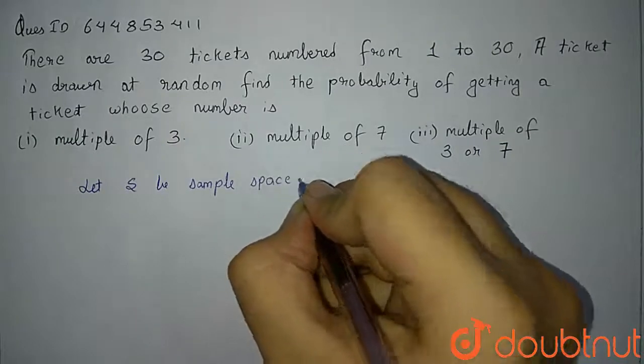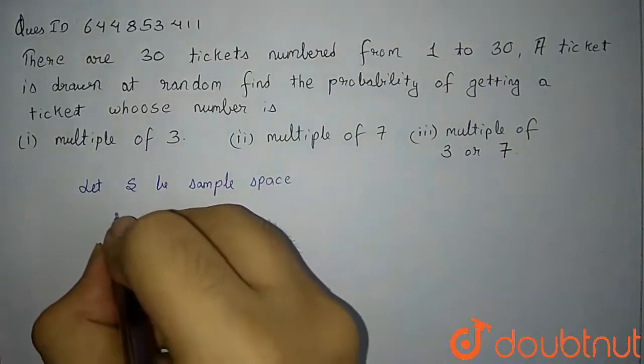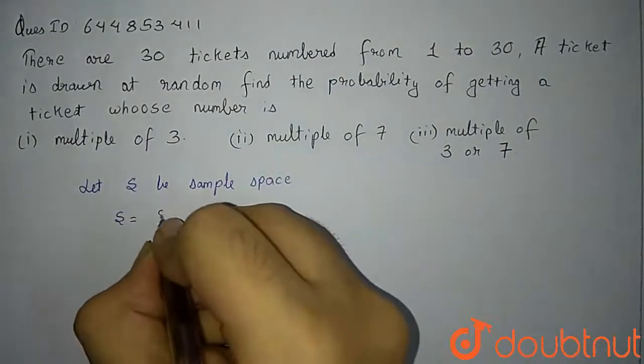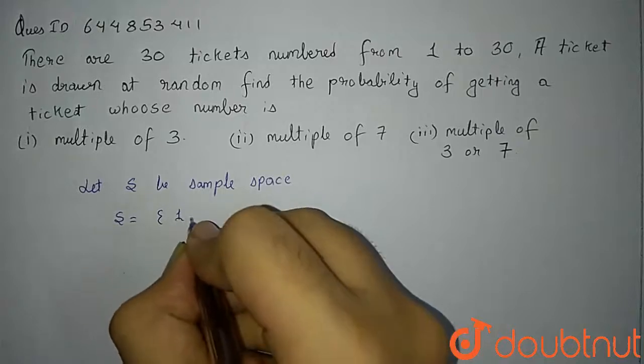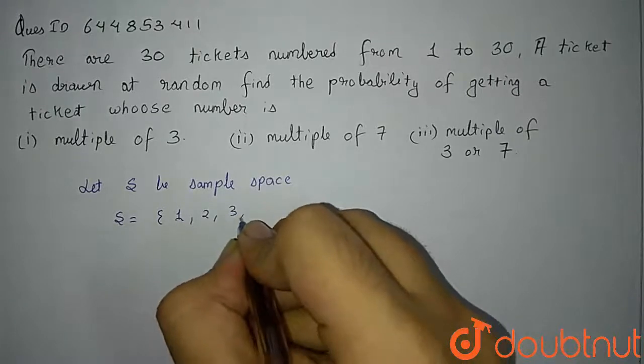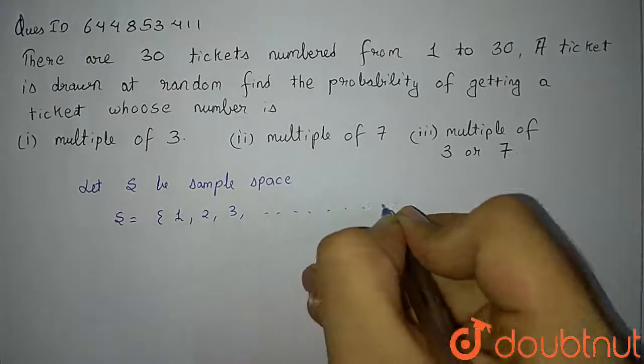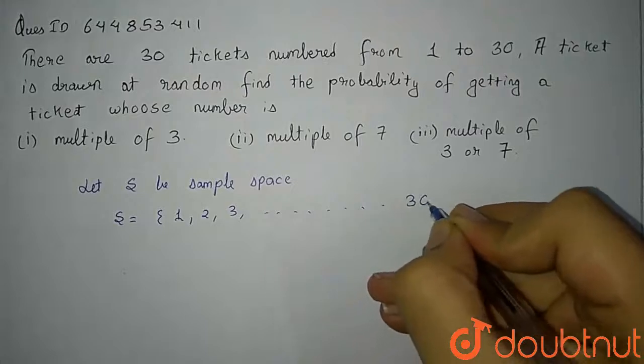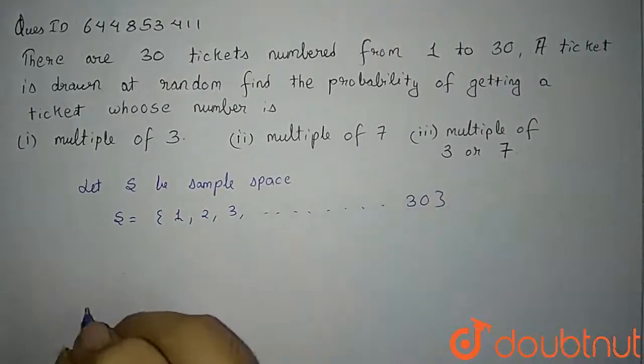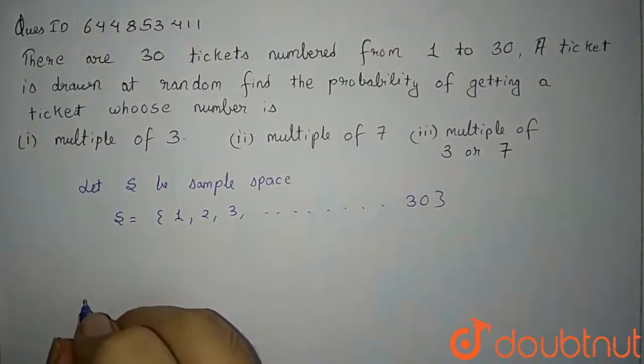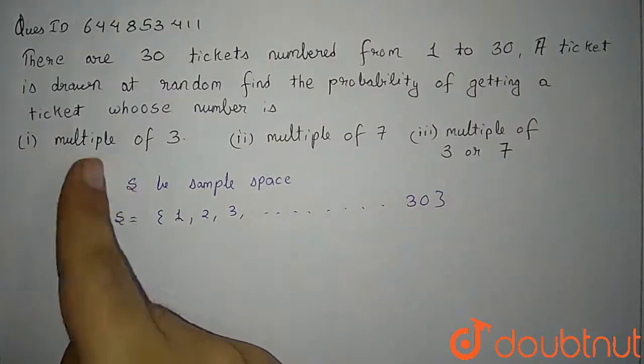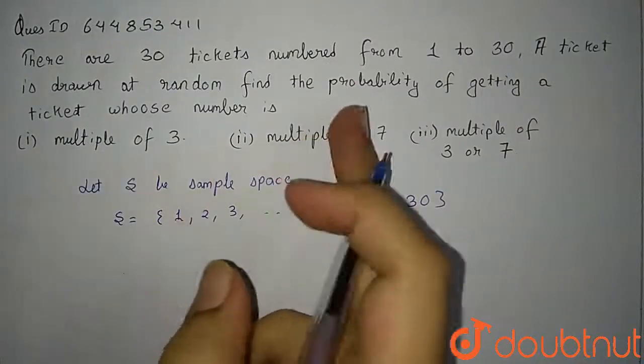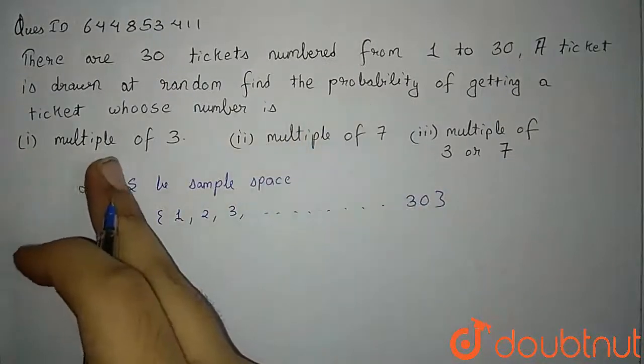Our sample space will be - let S be the sample space. Sample space is just the total number of possible outcomes. So S will be all the numbers from 1, 2, 3 all the way up to 30. Now let us talk about the first thing: multiple of 3.